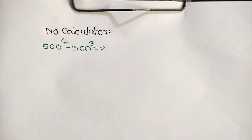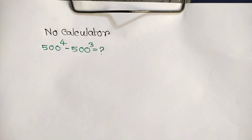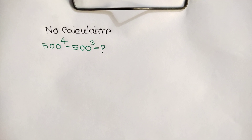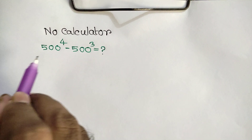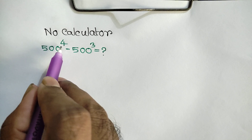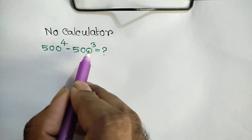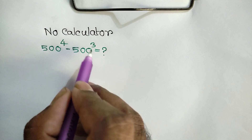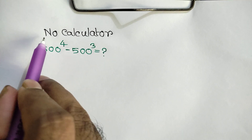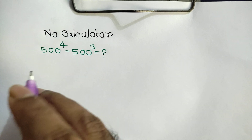Hi everyone. In this video I am going to show how to simplify this math Olympiad problem: 500 to the power 4 minus 500 to the power 3 is equal to what? Calculator not allowed.